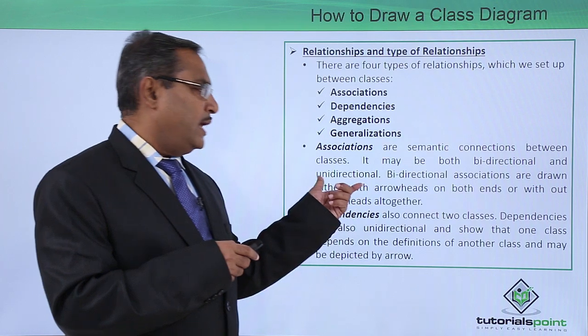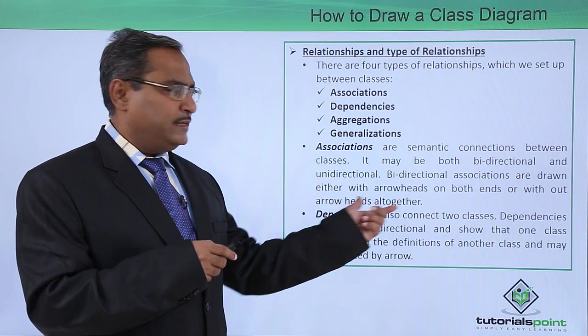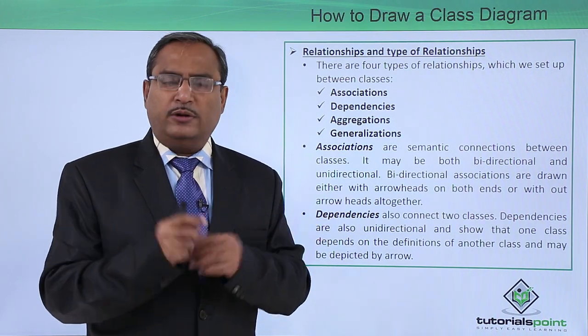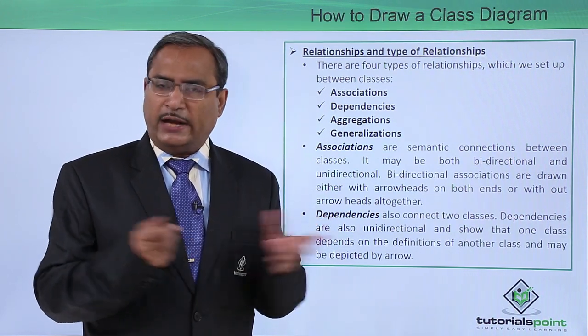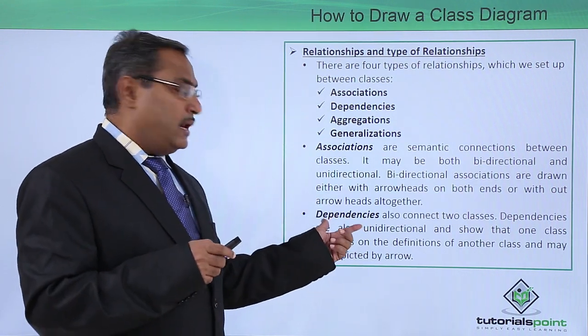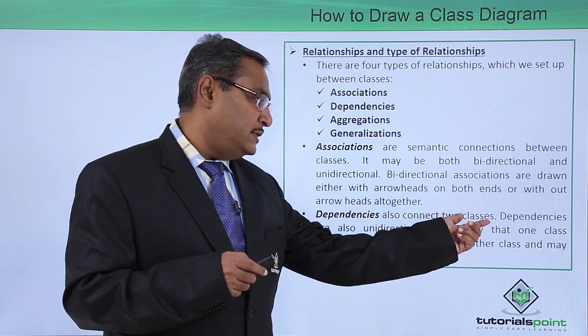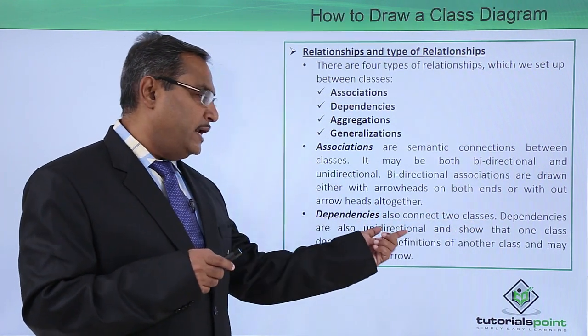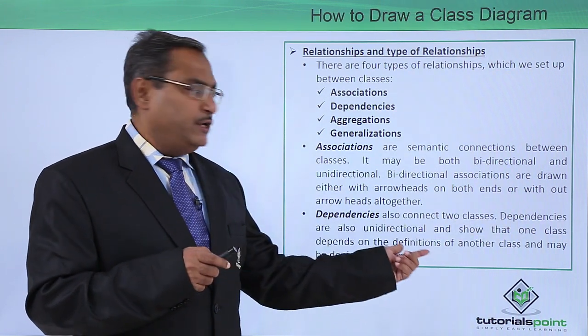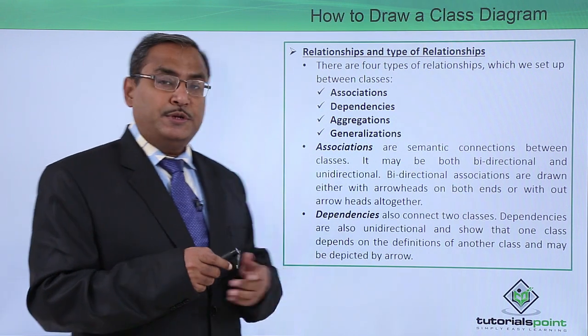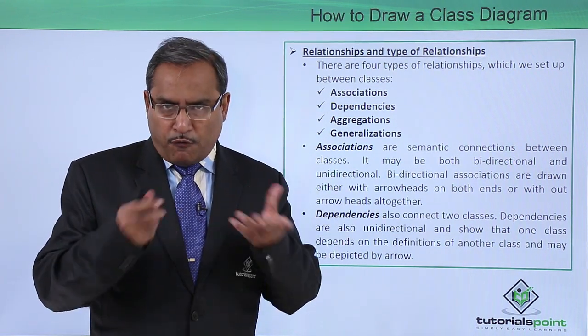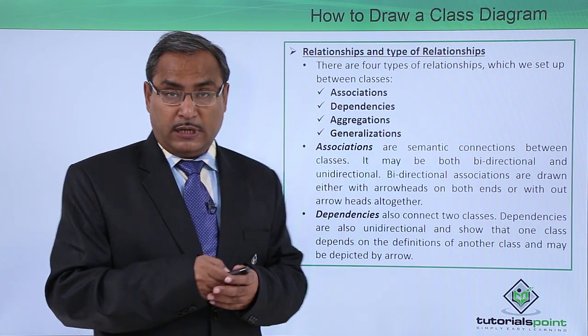It may be both bi-directional and unidirectional. In case of bi-directional, you can put arrows on both sides. You can have the arrowheads. Otherwise, you may not use any arrow. That will also indicate that this line is a bi-directional one. And here we are having the dependencies also connect two classes. Dependencies are also unidirectional and show that one class is depending on the definition of another class and may be depicted by an arrow. So I think it will be better if you go for one example for this respective relationships.